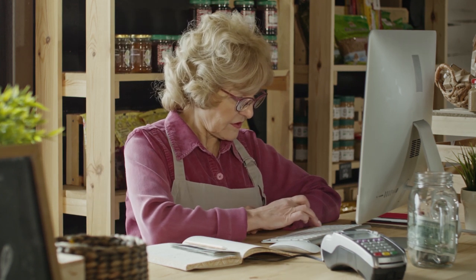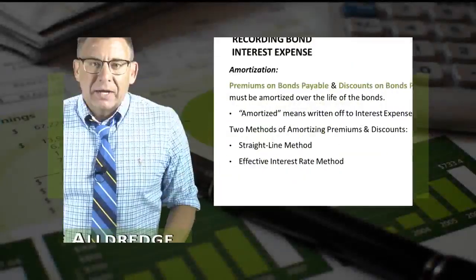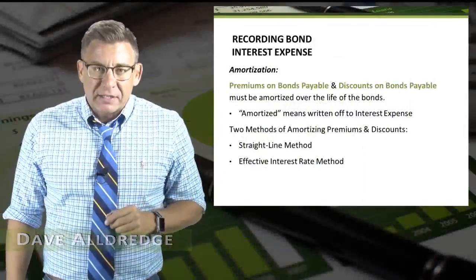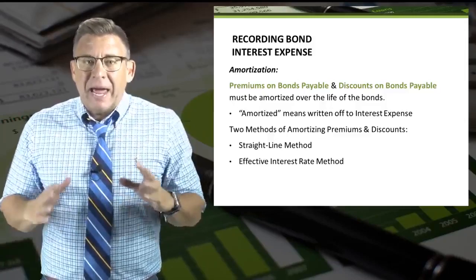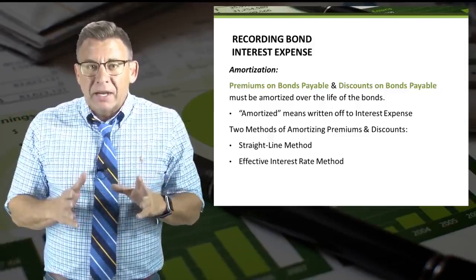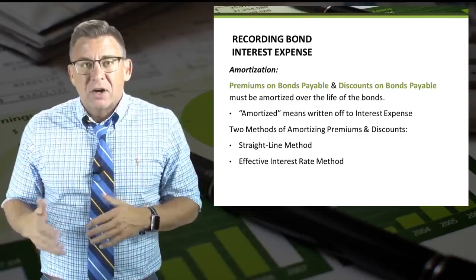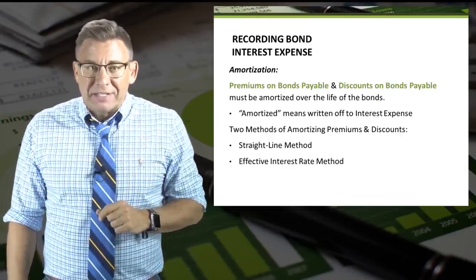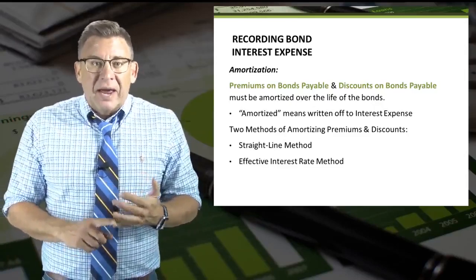It also refers to repayment of loan principal over time. What is an example of amortization? Amortization is a process of incrementally charging the cost of an asset to expense over its expected period of yield. We shift the asset from the balance sheet to the income statement. Examples of intangible assets are patent, copyright, taxi license, and trademark.